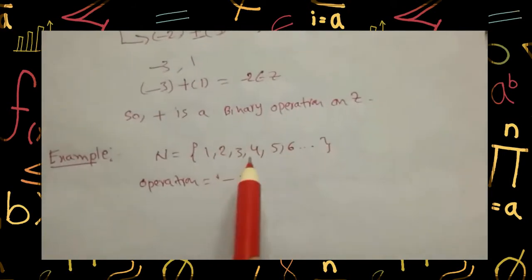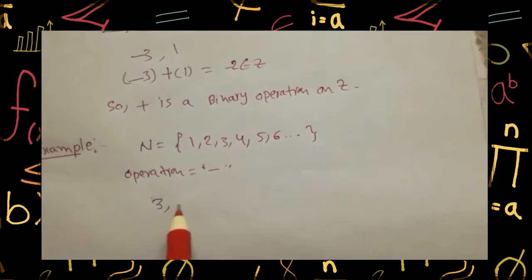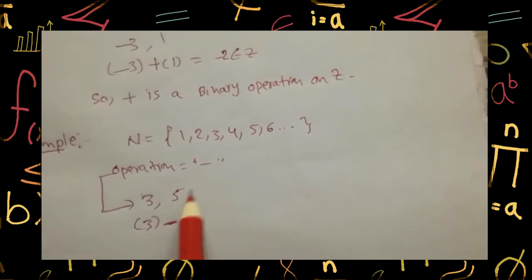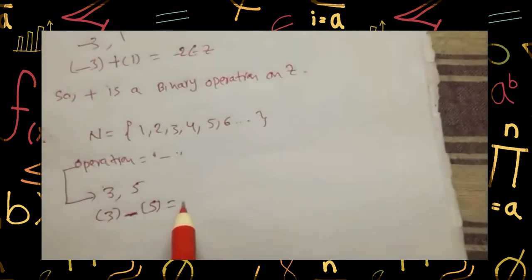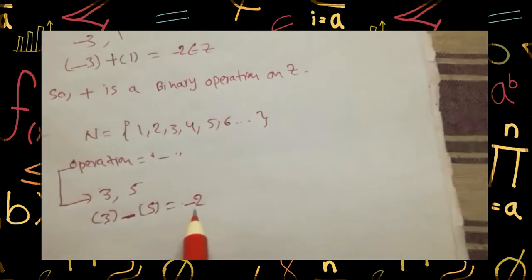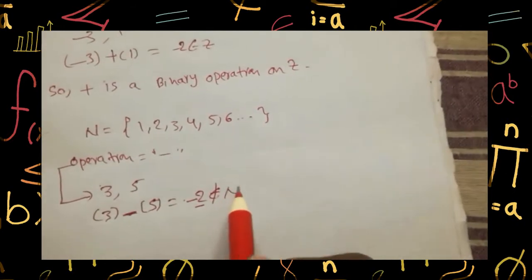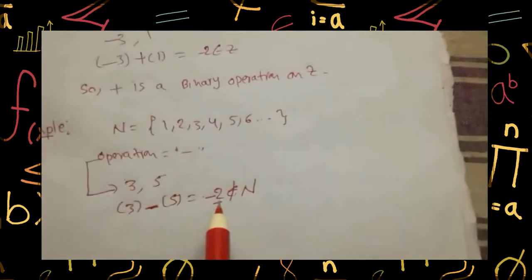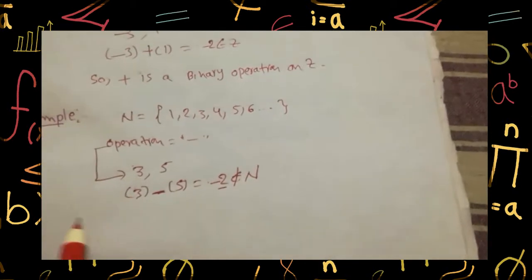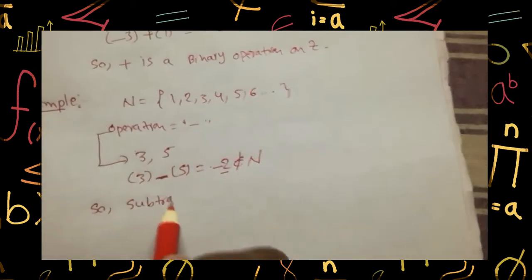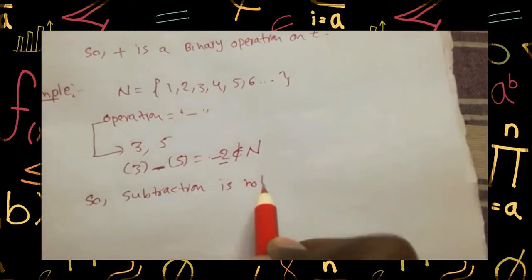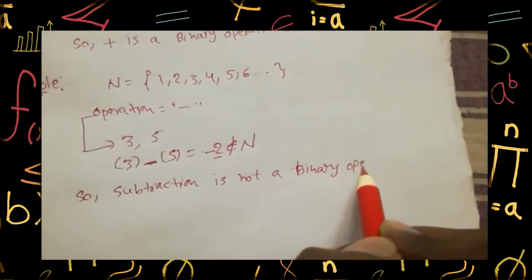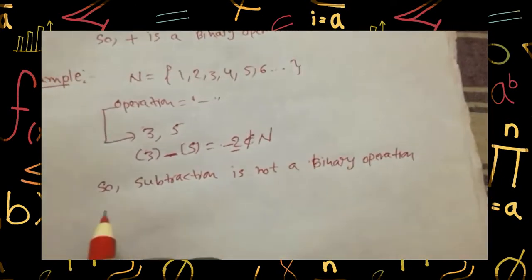Now take any two elements: three and five. Perform the operation subtraction on these two elements — three minus five equals minus two. The result element is minus two, which does not belong to N. According to the definition, the result element should also be in that set, but here minus two is not in N. So we can say that subtraction is not a binary operation on N.